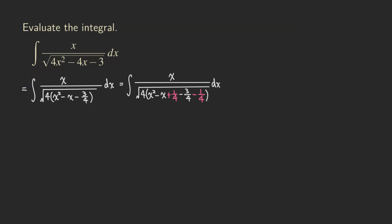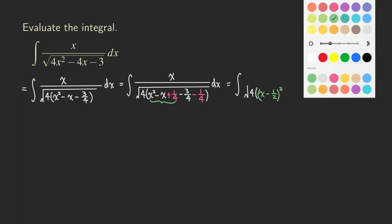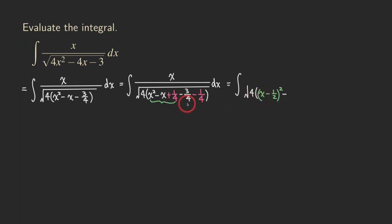To complete the square, we take x-squared minus x plus 1 over 4, which factors to (x minus 1 over 2) squared. Then the rest of the stuff is negative 3 over 4 minus 1 over 4, which is just negative 1. So we have (x minus 1 over 2) squared minus 1 inside the square root, with x at the top and dx.